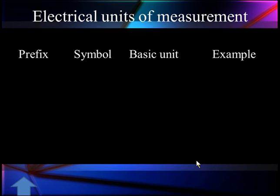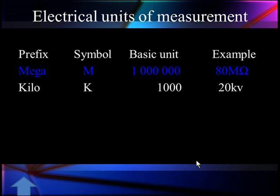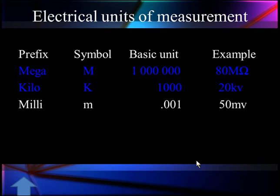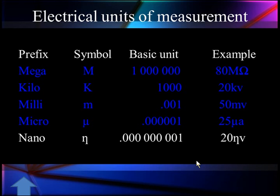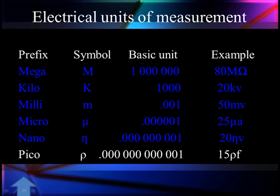There are some other electrical units we need to talk about. Mega — M — is 1 million; 80 megaohms is 80 million ohms. Kilo — K — is 1,000; 20 kilovolts is 20,000 volts. Milli — lowercase m — is 0.001, or one-thousandth; 50 millivolts is 0.050 of a volt. Micro — the symbol mu — is 1 millionth; 25 microamps is 25 millionths of an amp. Nano is even smaller at one-billionth. Now that we've learned about some of these new measurement techniques and terminology, let's go utilize some of these measurements and look at real automotive circuits. We'll see you next time. Thank you.